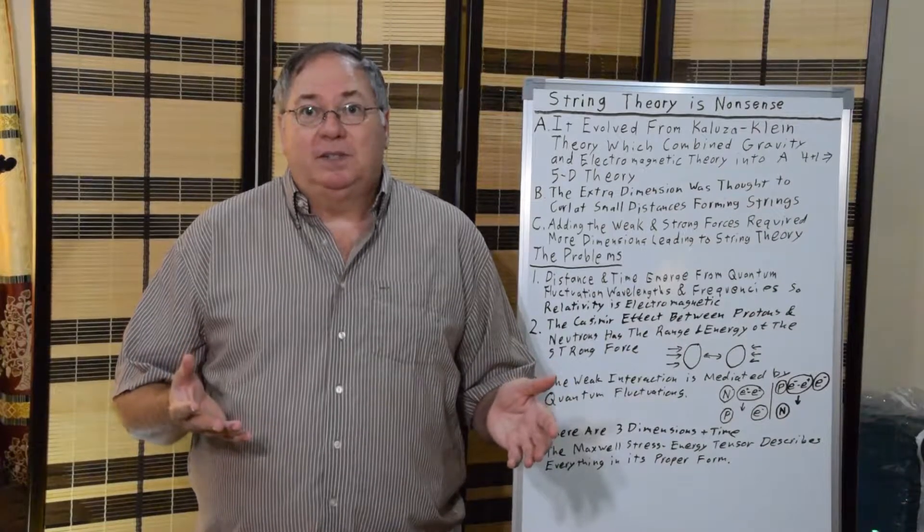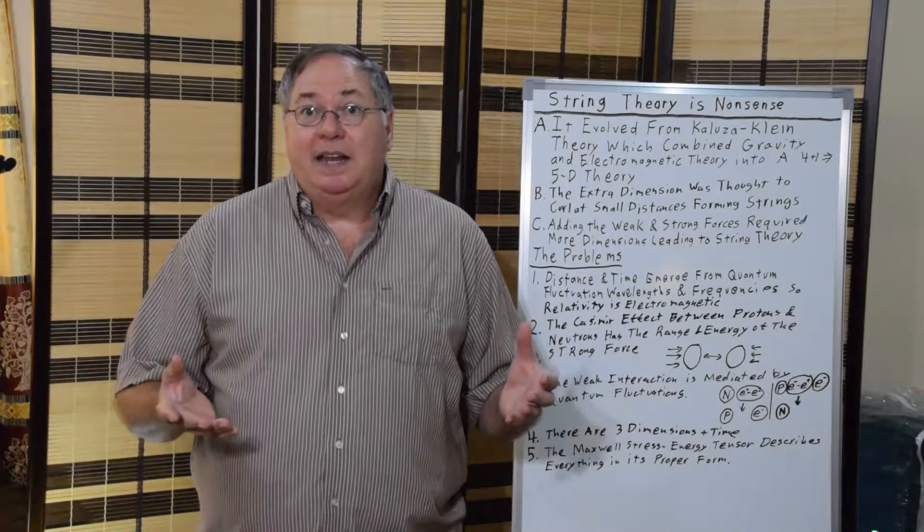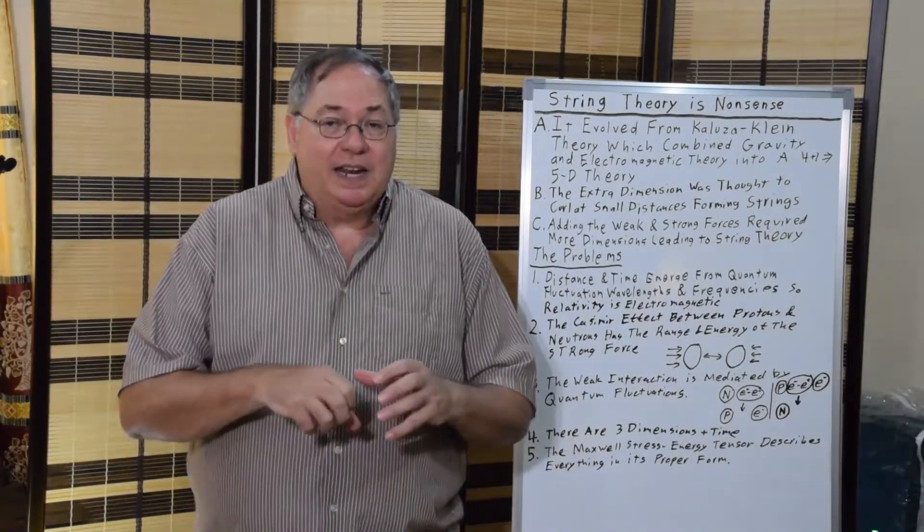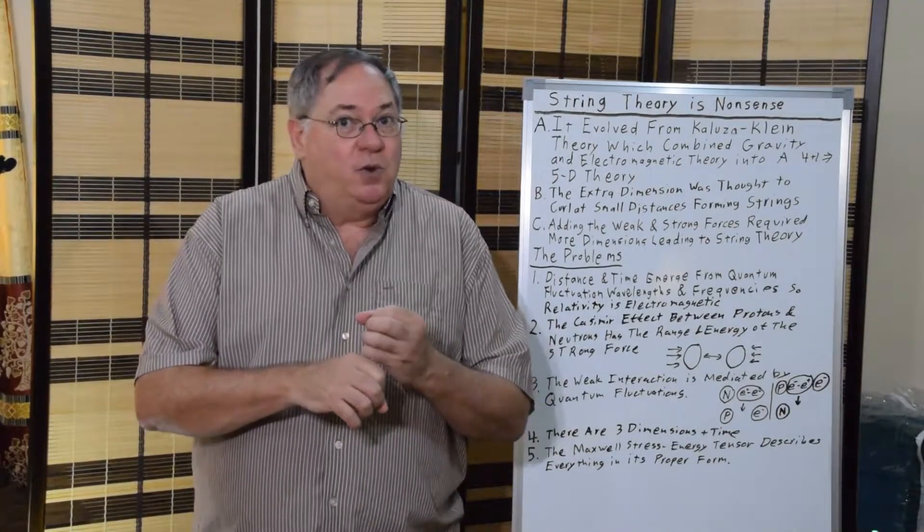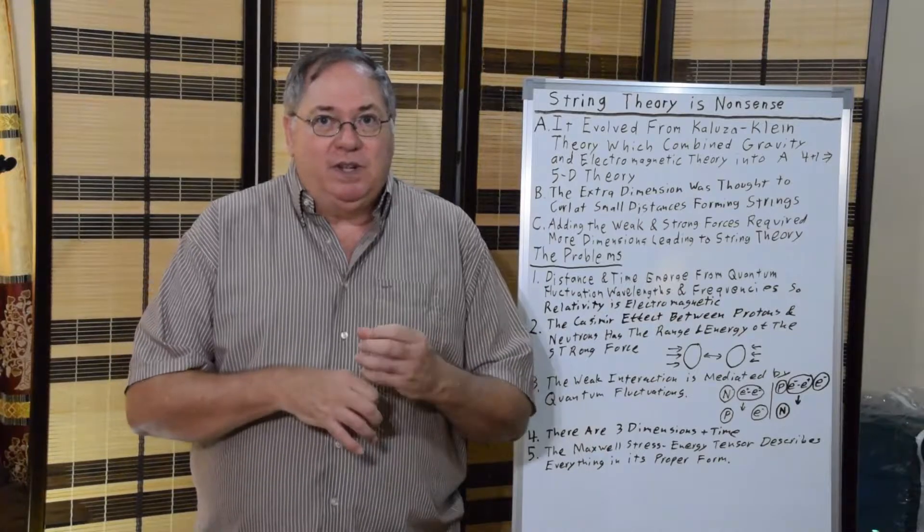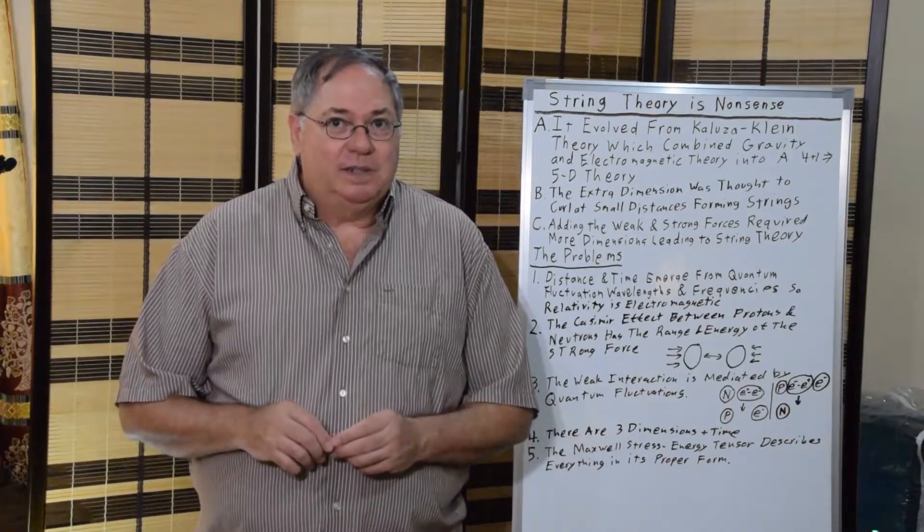Why don't we see it? What is it? And they came up with the idea originally, well, maybe it's curled up and it's curled up so small and you don't see it and you get these tubular-like strings with this really tiny extra dimension that's hidden from us. That's why we don't observe it.